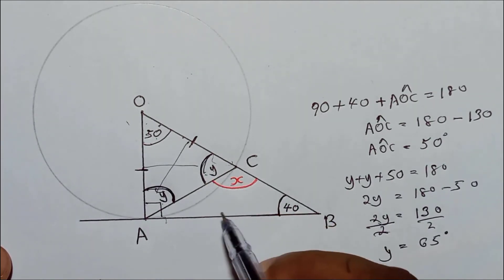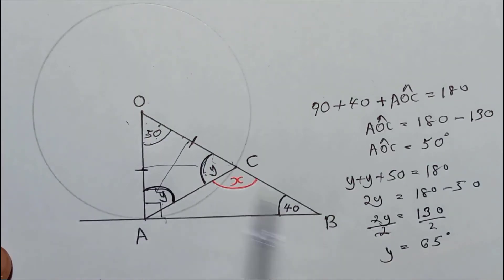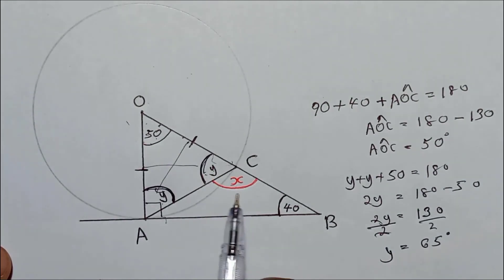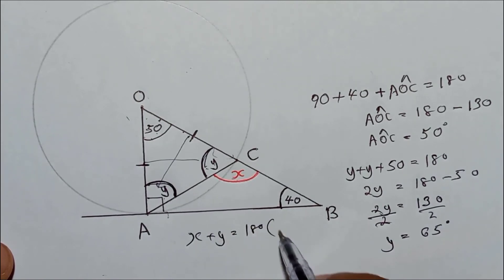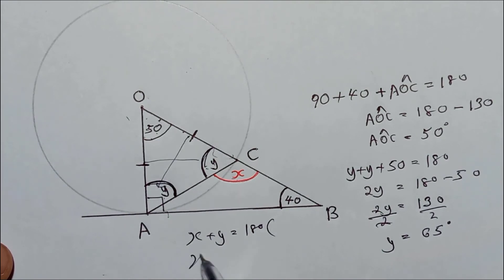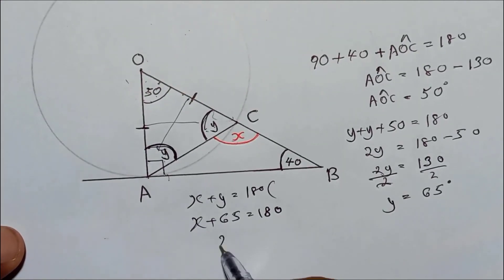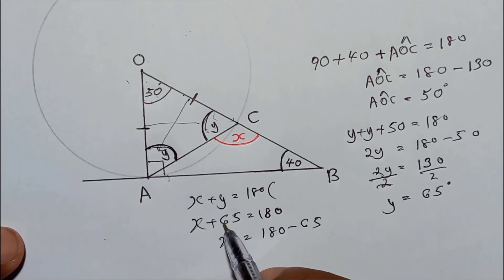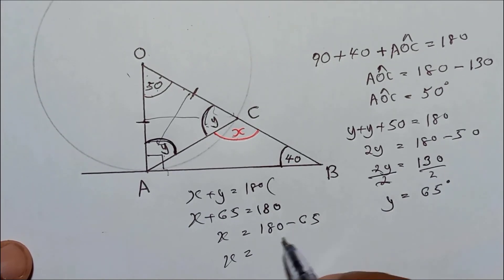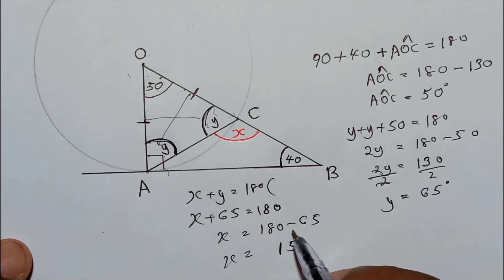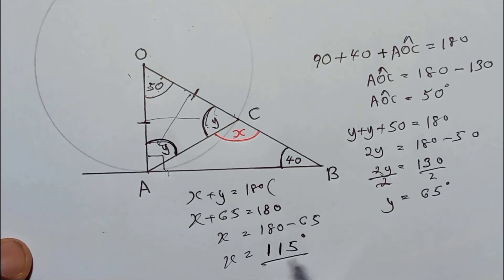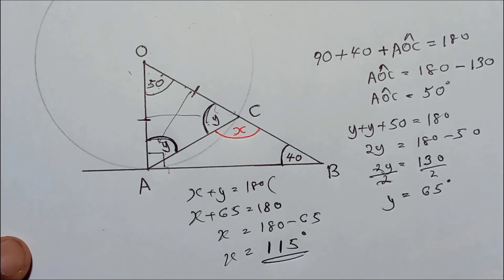Now you can see how to get x. This is an angle on a straight line — O, C, B is a straight line — so y plus x should equal 180. The reason is angles on a straight line. So x plus 65 equals 180, which gives x equal to 180 minus 65. Therefore x equals 115 degrees. That's the answer for x.